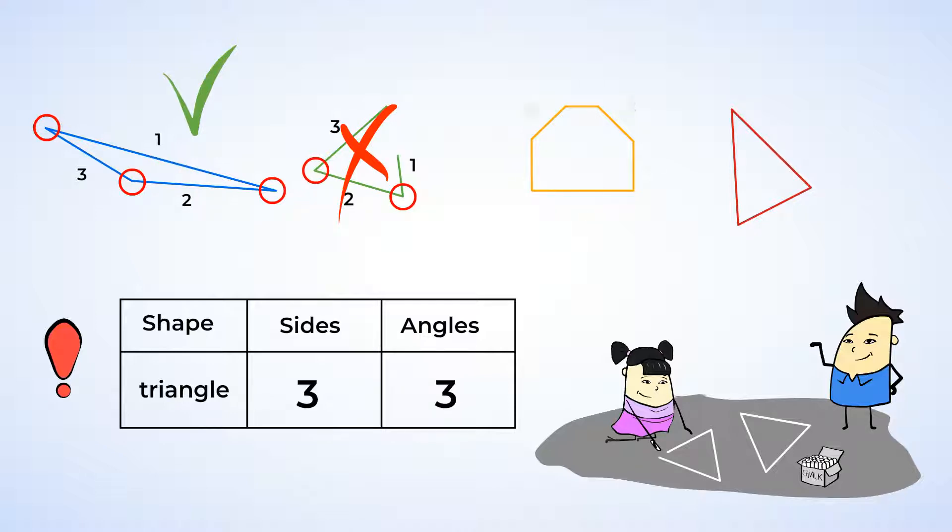The yellow shape has 6 sides and 6 angles, that's too many. This is also not a triangle. And the red shape has 3 sides and 3 angles, this is most certainly a triangle.